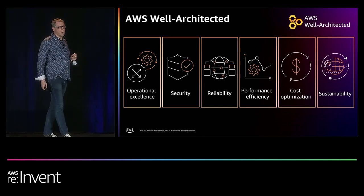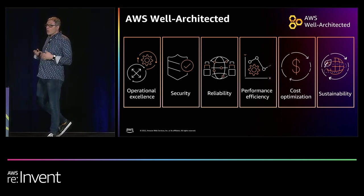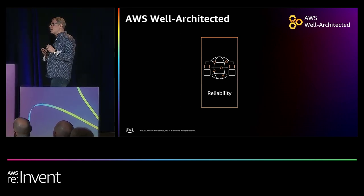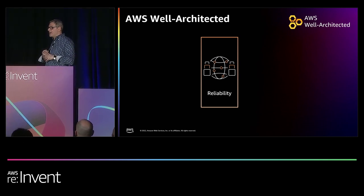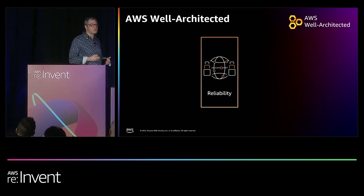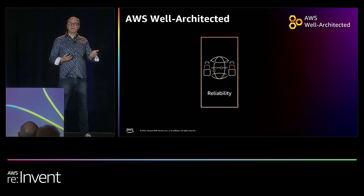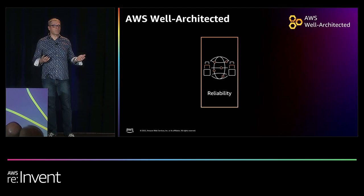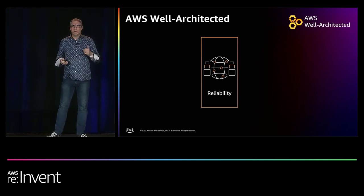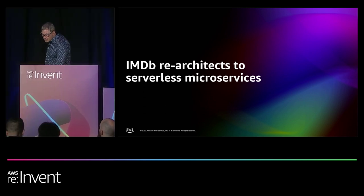We're going to use the Well-Architected Framework as a framework to present these examples. The Well-Architected Framework consists of six pillars — they're all important, but today we're focused on reliability. The reliability pillar has 66 best practices documented for building in the cloud. We also have hands-on labs and a Well-Architected tool where you can review your own workloads. As I show you examples, I'm going to talk about which best practices are illustrated in the architectures we're looking at.